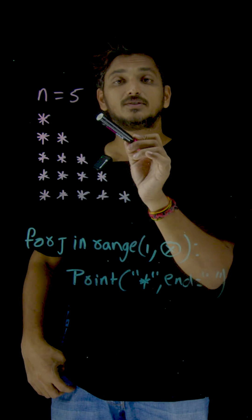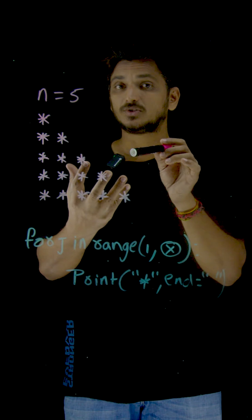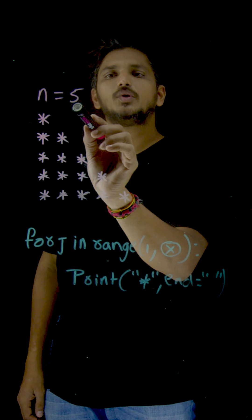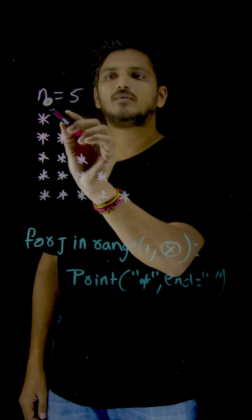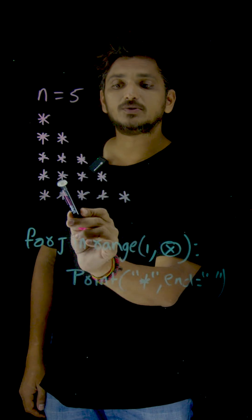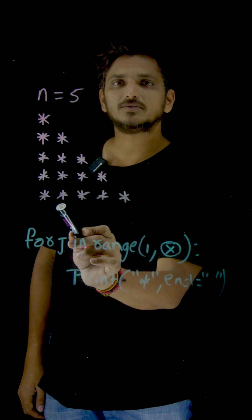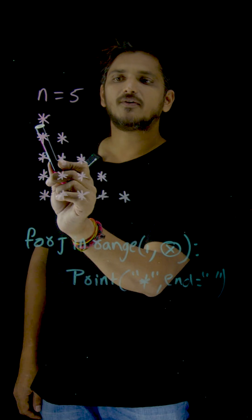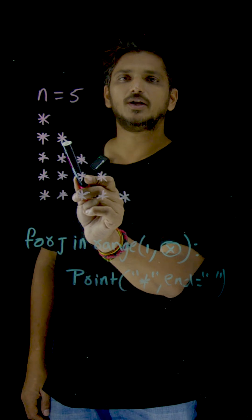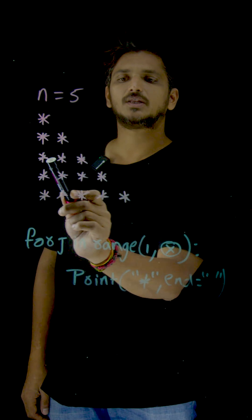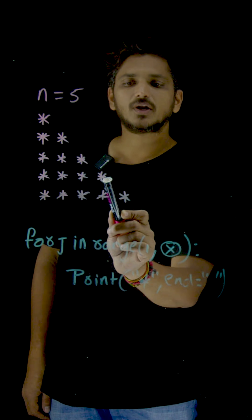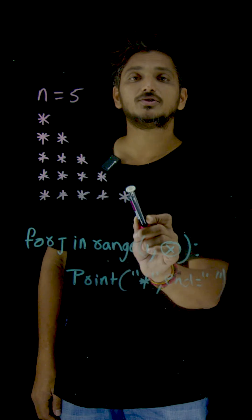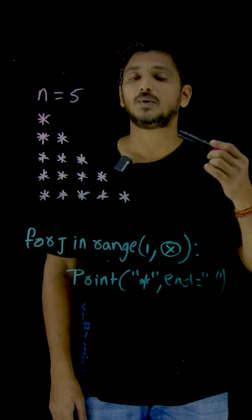Let's try to understand the question. In this question, you have to provide an input. If your input is 5, n is equal to 5, you need to display like this — this is the pattern you need to display. In the first line, 1 star. In the second line, 2 stars. In the third line, 3 stars. In the fourth line, 4 stars. In the fifth line, 5 stars. This is what you need to display.